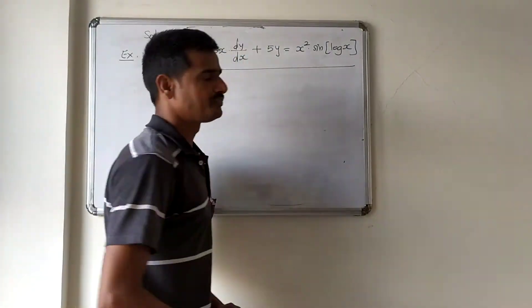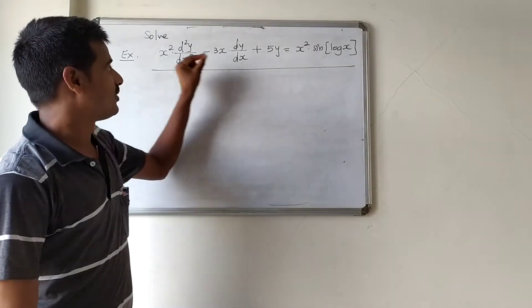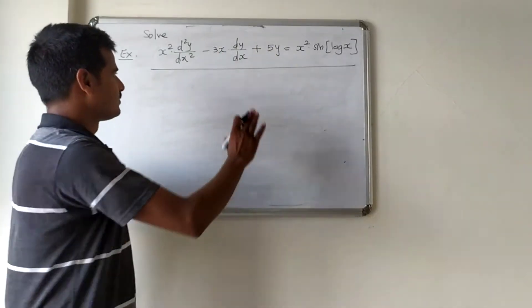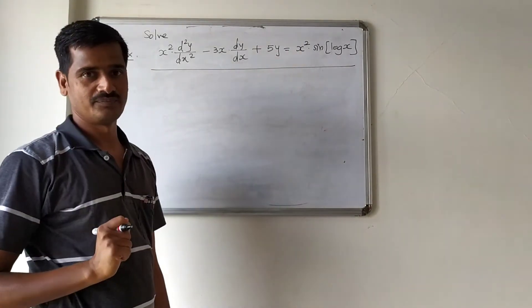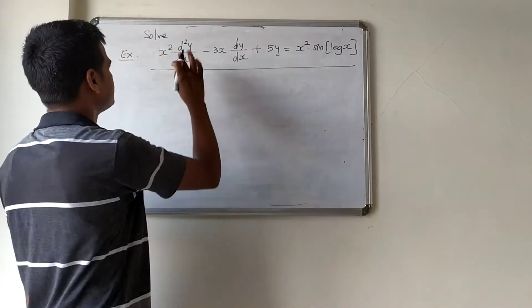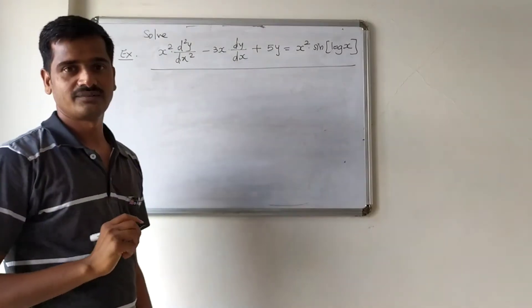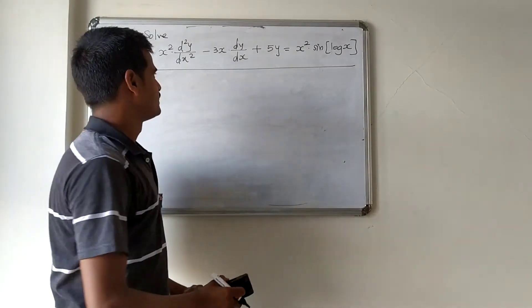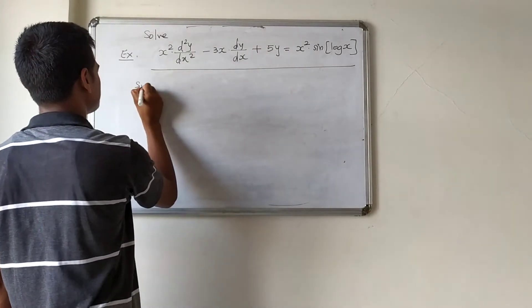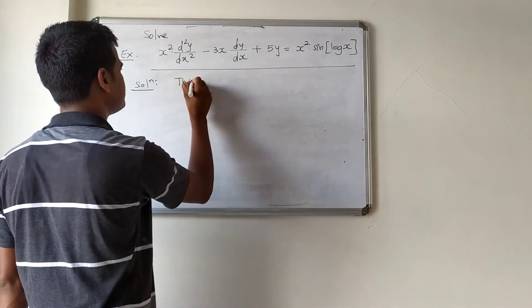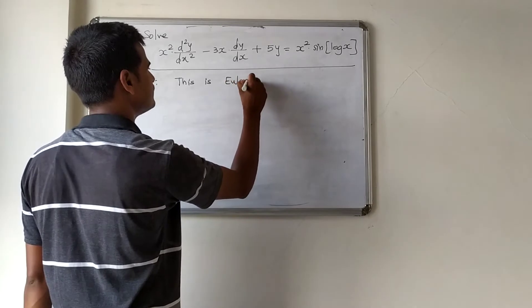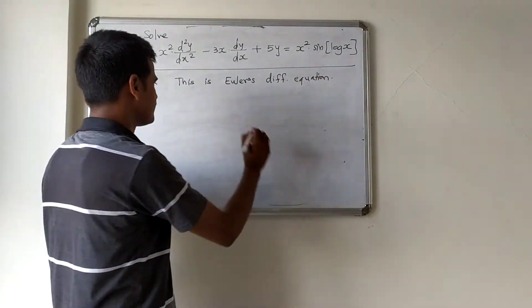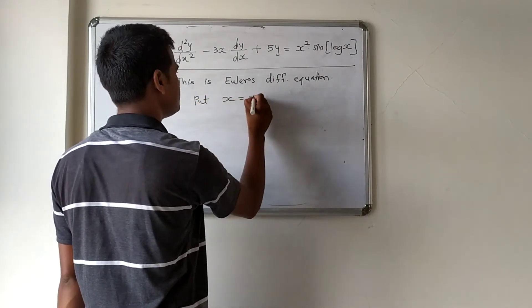Since x is attached with dy/dx and x² is attached with d²y/dx², this is a second-order Euler's or Cauchy's linear differential equation. For the solution, we first recognize it is Euler's differential equation. Our substitution is: put x = e^z, so therefore z = log x. We replace x(dy/dx) by Dy, where capital D stands for d/dz.